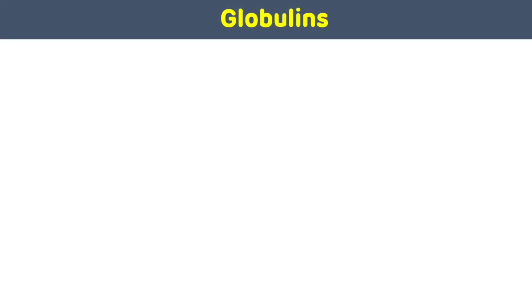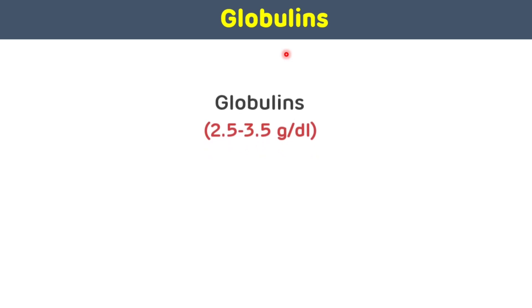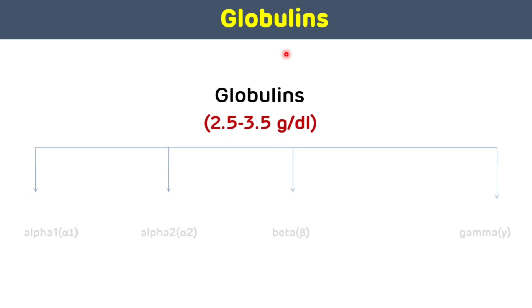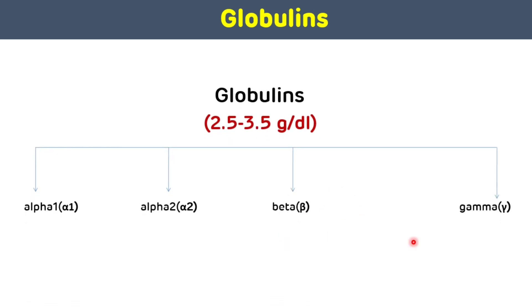As we have seen in the previous video, there are three major constituents of plasma protein. The first one is albumin, the second one is globulins, and the third one is fibrinogen. There are three types of globulins: alpha globulin, beta globulin, and gamma globulin. Alpha globulin is further divided into alpha 1 globulin and alpha 2 globulin. In today's video we will discuss all these globulins in detail along with their examples.